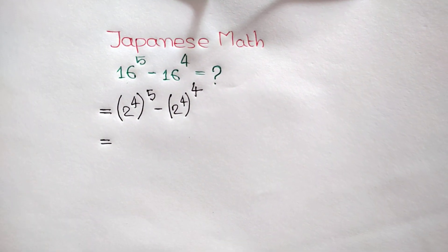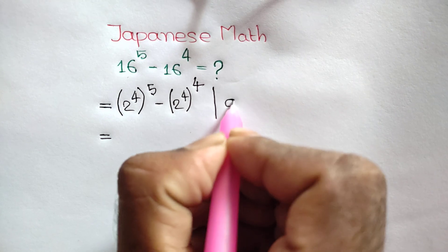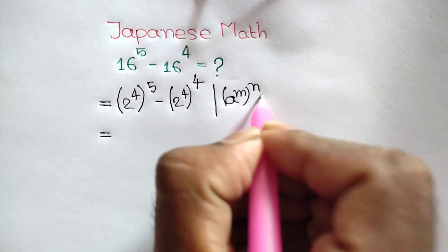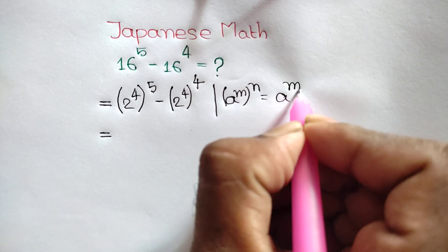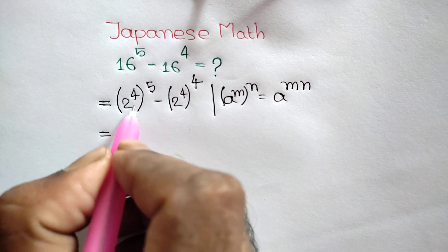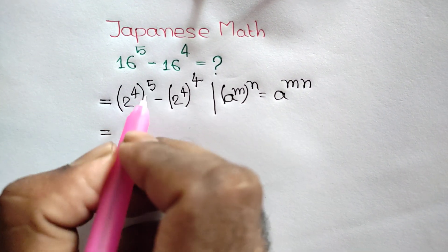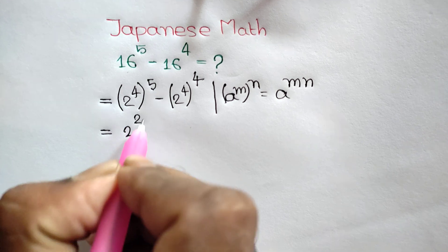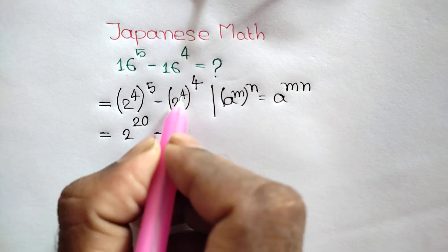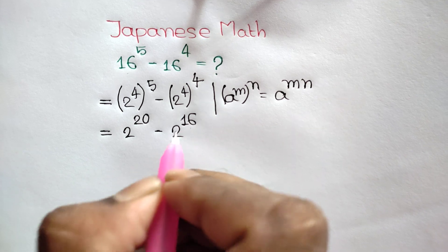Now we know that a to the power m, whole to the power n, is equal to a to the power m times n. So according to this formula, we can write here 2 to the power 4 times 5 is 20, minus 2 to the power 4 times 4 is 16.